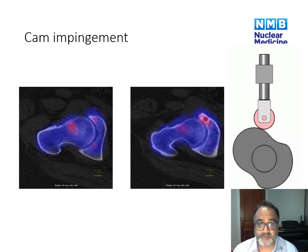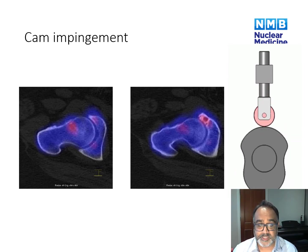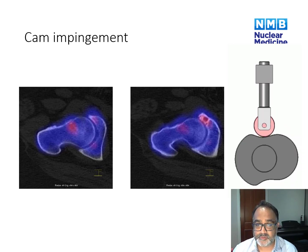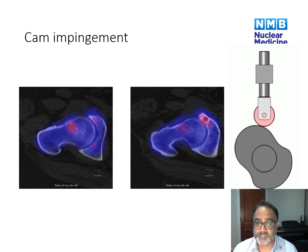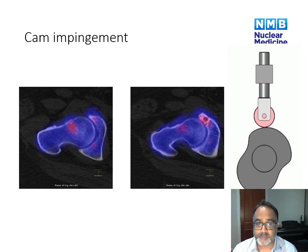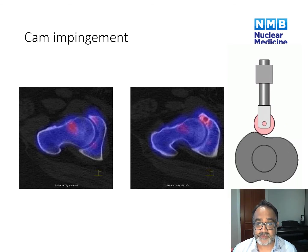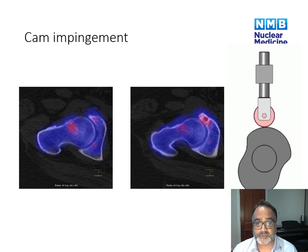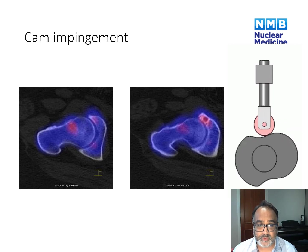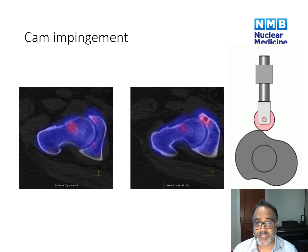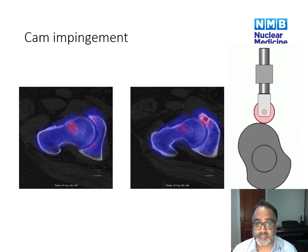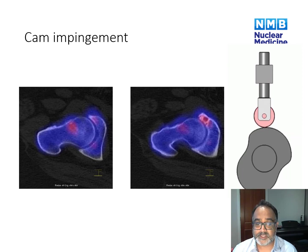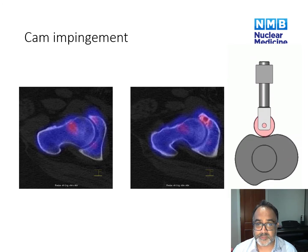If there is a convexity of the femoral neck and the alpha angle is greater than 55 degrees, this suggests cam impingement. A cam is an ellipsoid device that rotates and causes an upward motion — similarly, the slight convexity of the femoral neck impinges on soft tissues as the hip rotates within the socket. On the SPECT CT image on the left, there is focal increased uptake at the site of impingement. On the same patient, the image on the right shows focal increased uptake in the acetabulum with accelerated degenerative changes and subarticular cystic lesions.